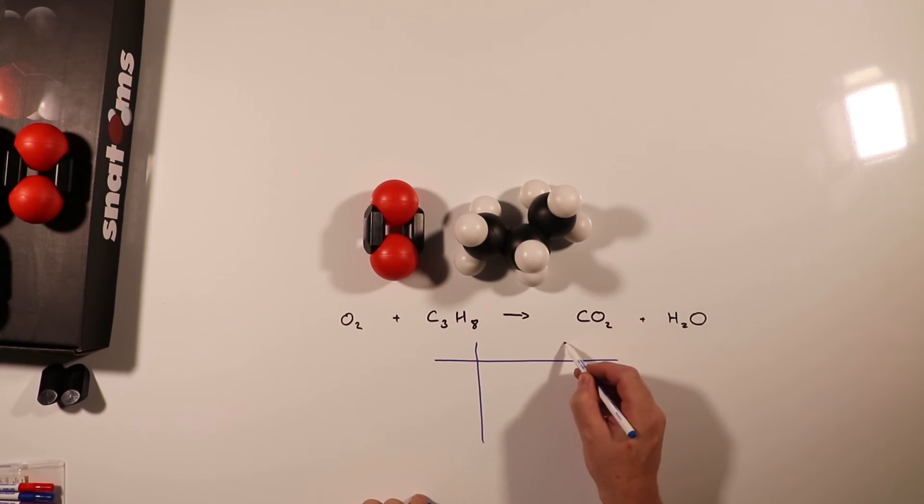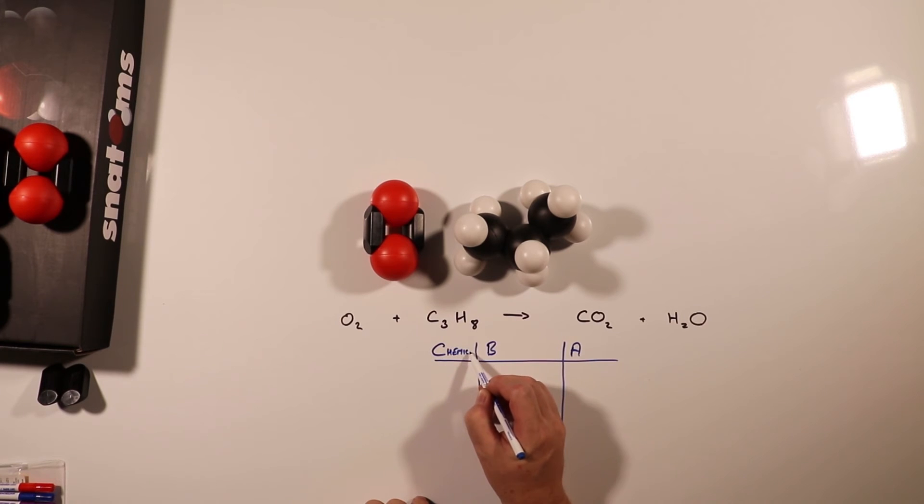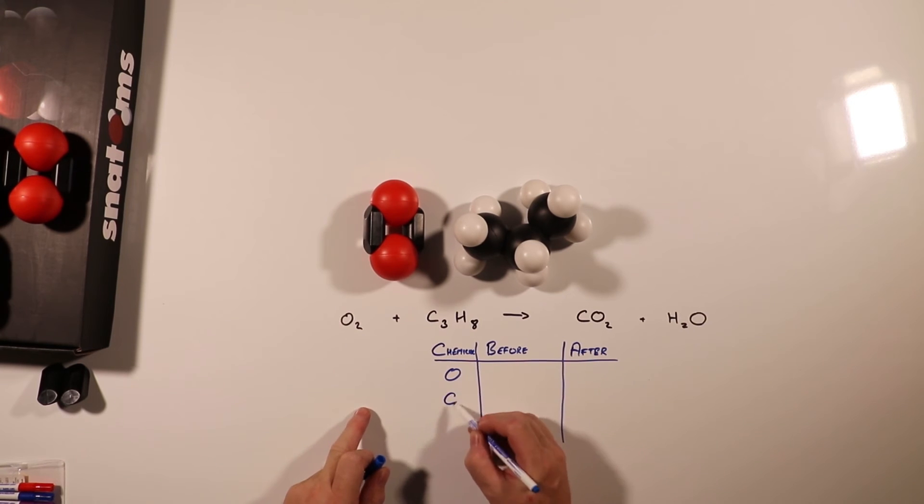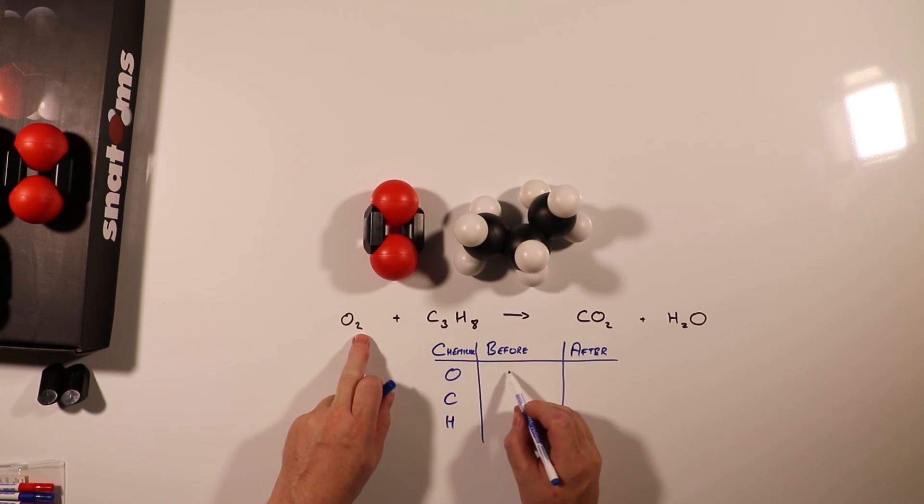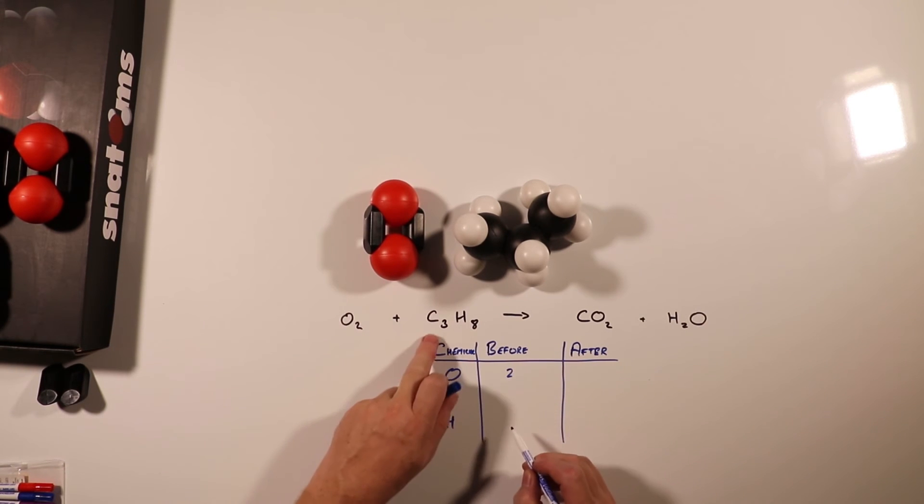The way to remember this is simply that I can't be asked to do the work. This is the chemical, this is before, and this is after. The chemicals that we have are oxygen, carbon, and hydrogen. Before we have two, three, and eight.